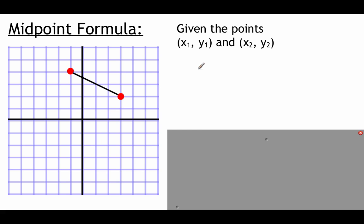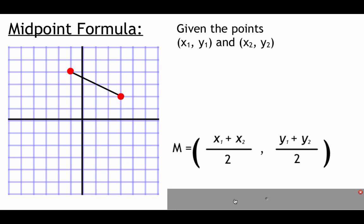Next, we're going to look at the midpoint formula. Given two points (x₁, y₁) and (x₂, y₂), the name tells us what we're doing — finding a point in the middle. A middle value is essentially an average. So to find the midpoint, we average the x-values by adding them and dividing by 2, and then average the y-values the same way — add them and divide by 2.